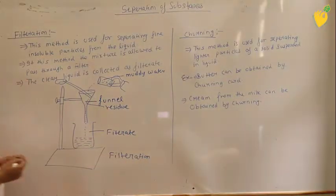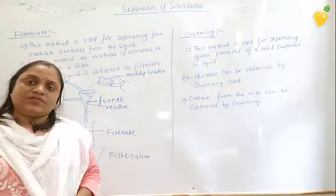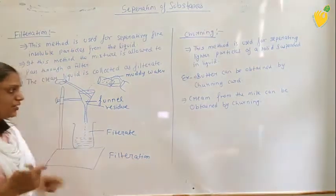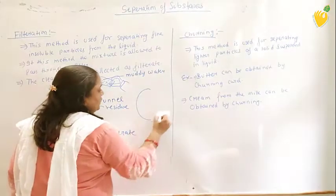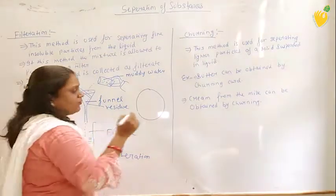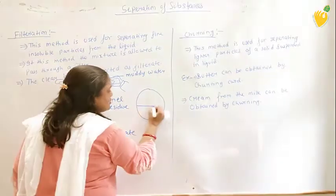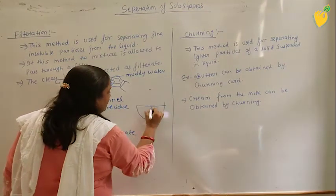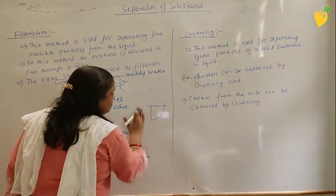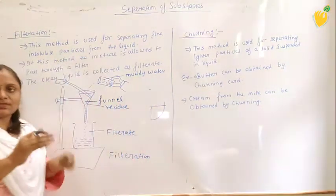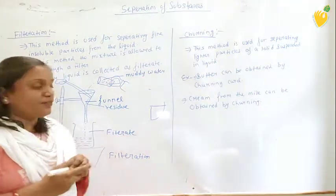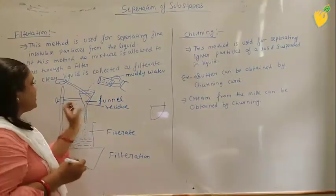For the process of filtration, we have to use a filter paper. The filter paper is folded first in half, then again from one side to convert it into the form of a cone, which we keep inside the funnel.